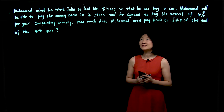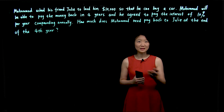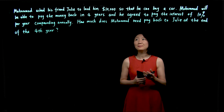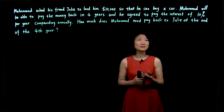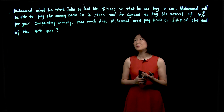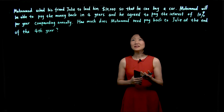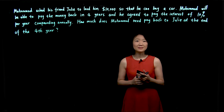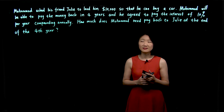Mohamed asked his friend Julie to lend him $10,000 so that he can buy a car. Mohamed will pay the money back in four years and he agreed to pay interest of 10% per year, compounding annually. How much does Mohamed need to pay back to Julie at the end of the fourth year?